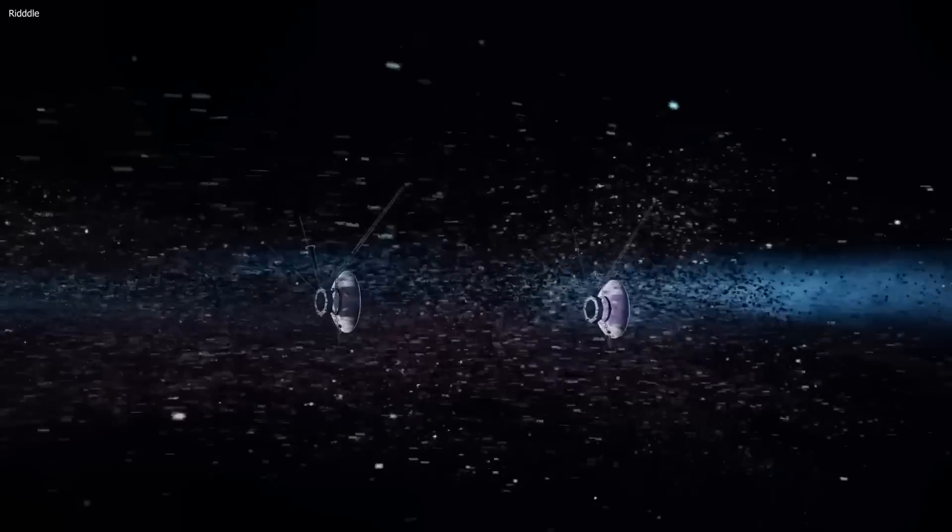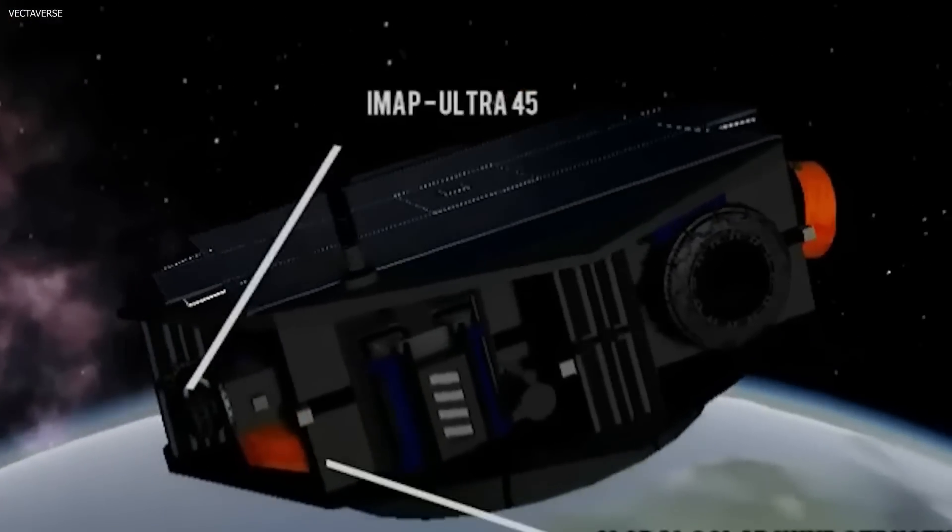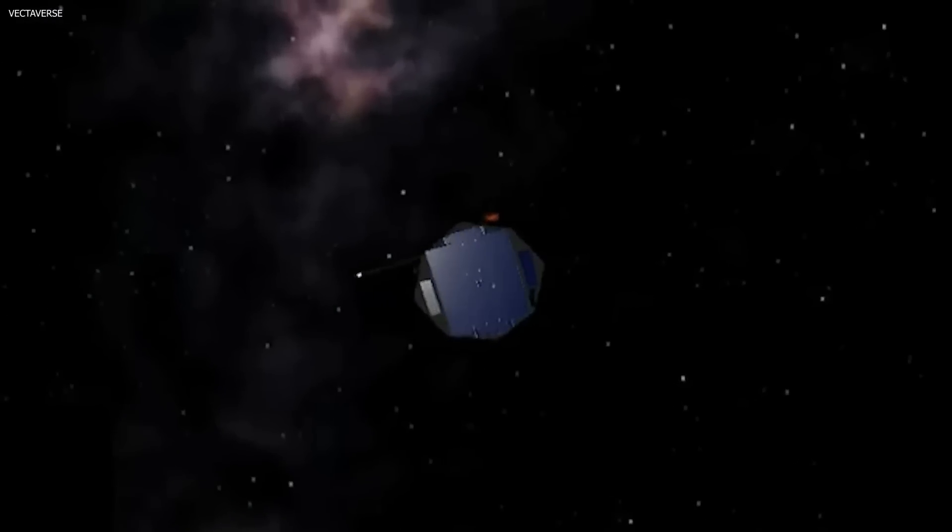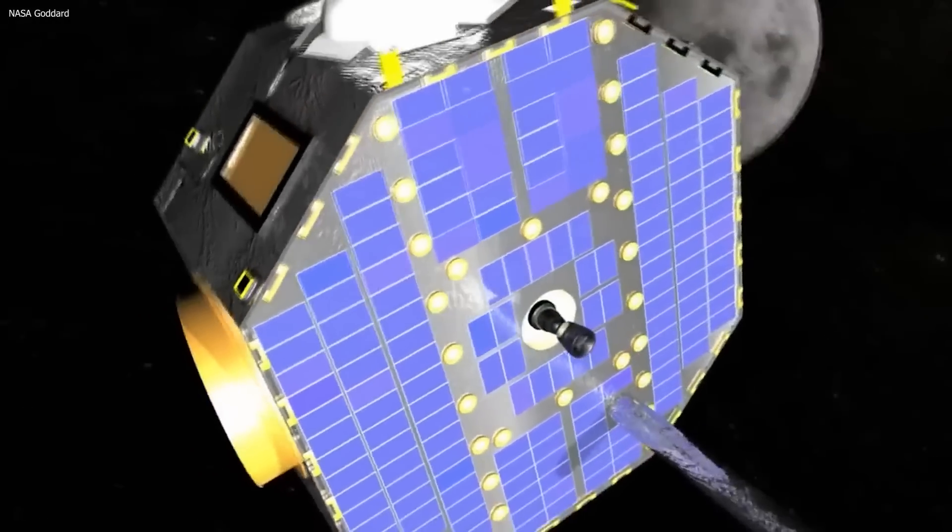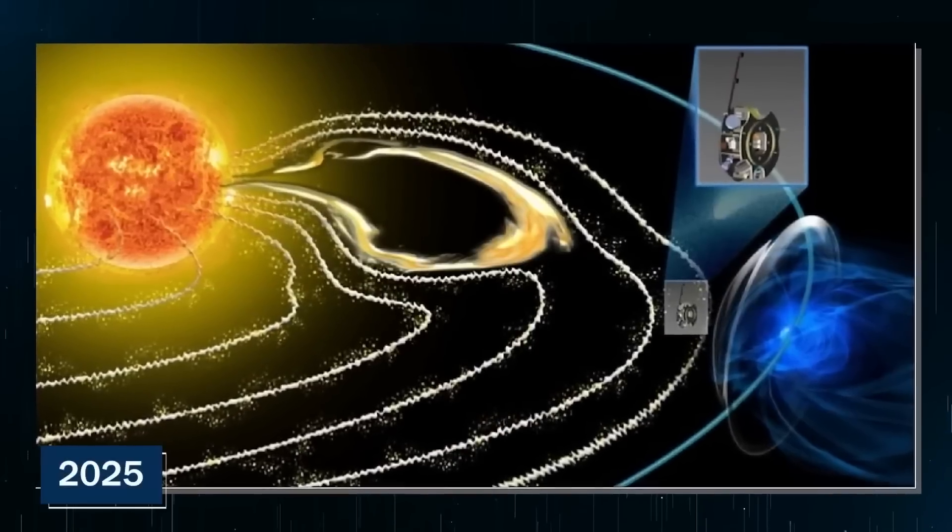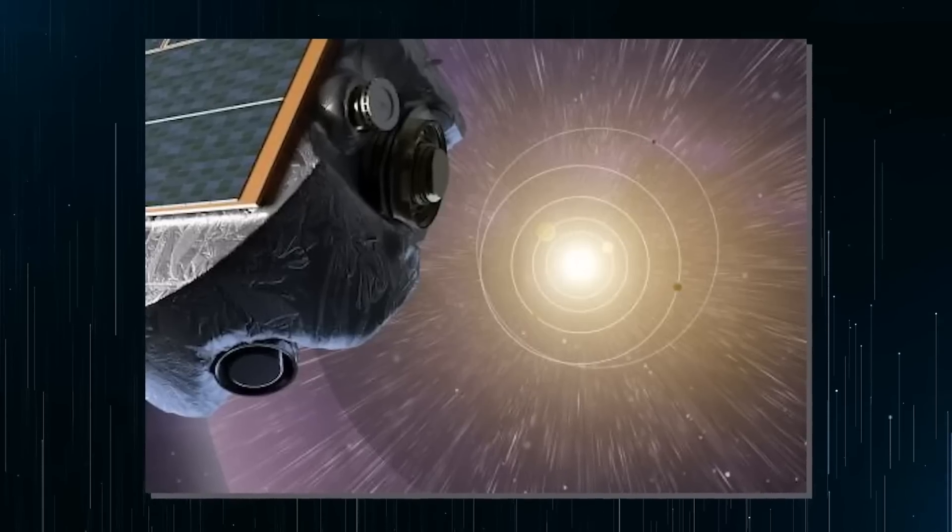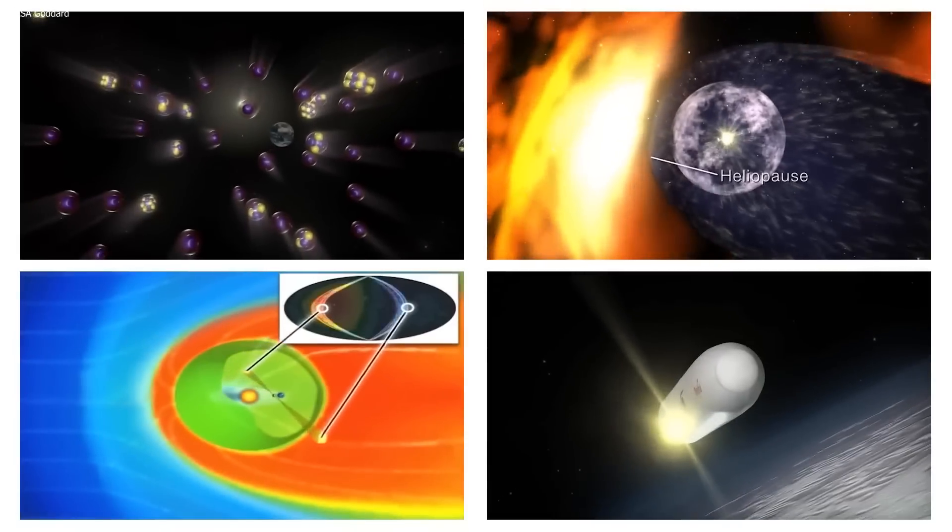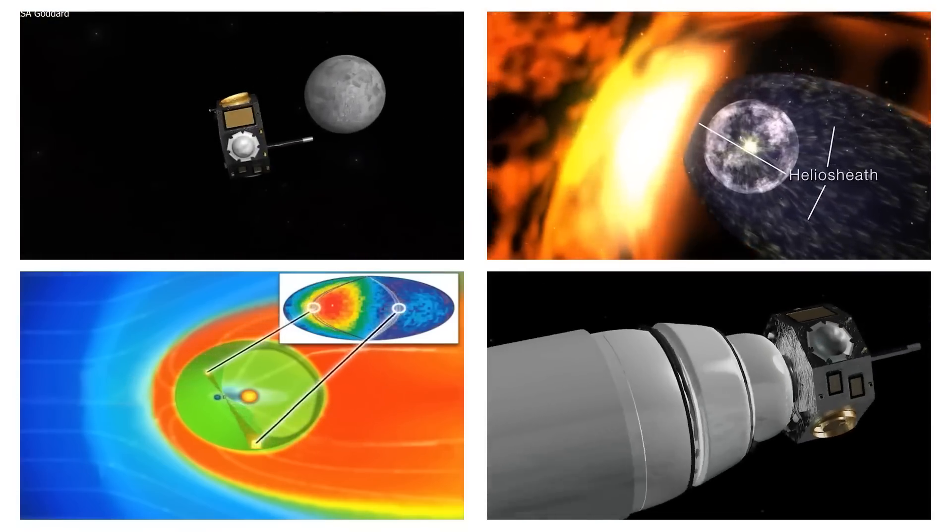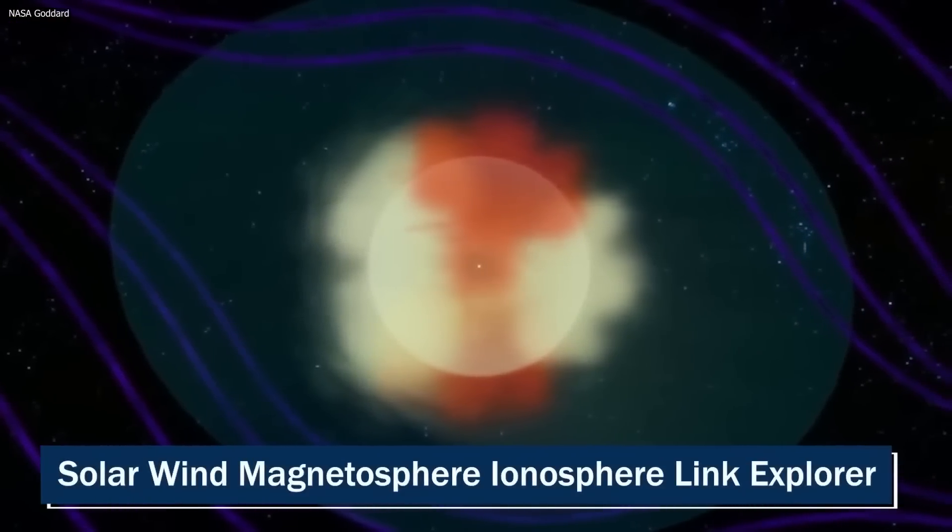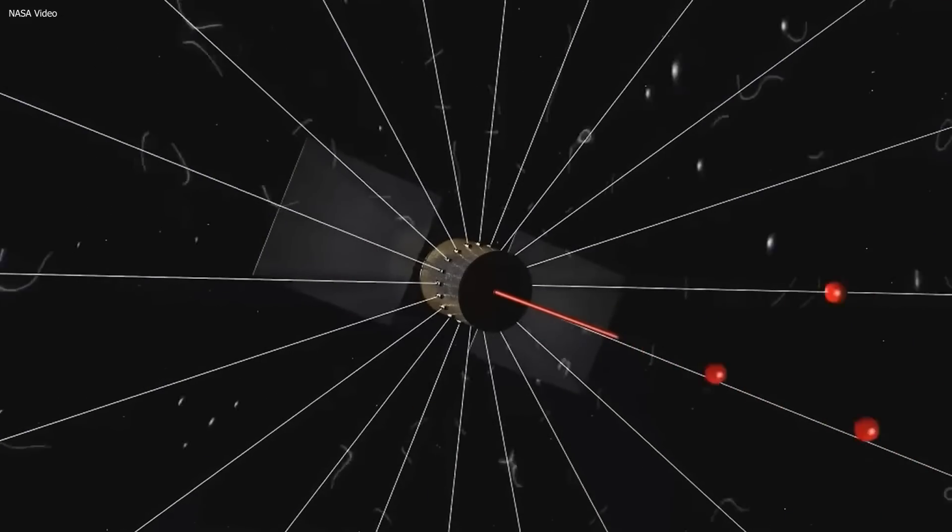One of the upcoming missions by NASA, the Interstellar Mapping and Acceleration Probe, IMAP, is specifically designed to study the heliosphere and the heliopause. IMAP is expected to provide a more detailed and comprehensive understanding of the heliosphere's structure, as well as the processes that shape it. The probe is set to launch in 2025 and will use a suite of instruments to measure and map the distribution of particles and magnetic fields in the region. In addition to IMAP, there are other proposed missions that could provide further insight, such as the SolarWinds Magnetosphere-Ionosphere Link Explorer, SMILE, and the Heliopause Electrostatic Rapid Transit System, Hertz.